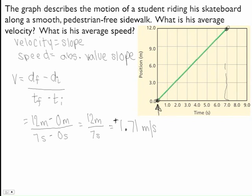Now, the speed is just the absolute value of the slope. So to get the speed, we'll just take 1.71 and take the absolute value, which is just 1.71. If it had been negative 1.71, your speed would be positive. But in this one, in this case, they're both positive, and they're both 1.71.